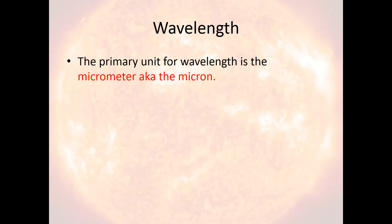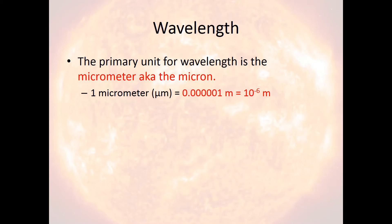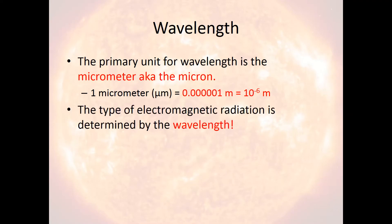The unit we use in particular is what's called the micrometer. Think about a meter, which is about three and a quarter feet — about the length of one of your arms, maybe a little longer. Well, a micrometer represents one one-millionth of that meter. That is extremely tiny. In fact, if you have a sheet of paper, that sheet of paper is many micrometers thick. This is our primary unit for wavelength.